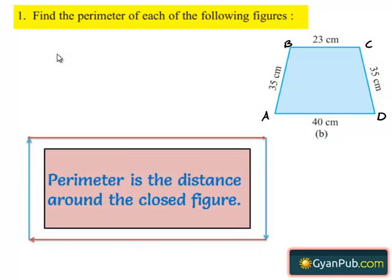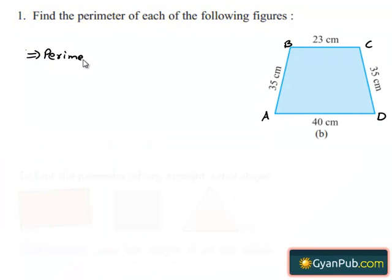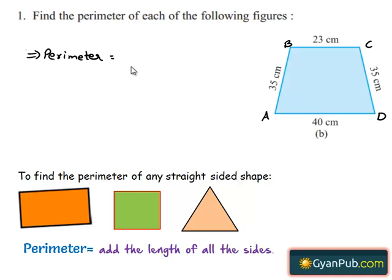So this implies perimeter of the given figure is nothing but the sum of the sides of the figure, that is AB plus BC plus CD plus DA.